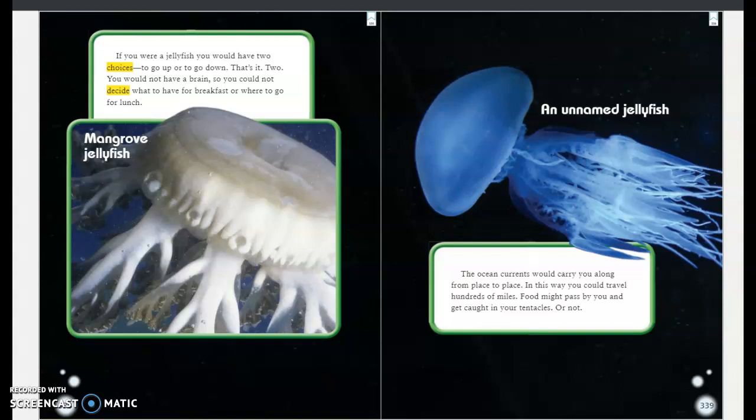This is an unnamed jellyfish. The ocean currents would carry you along from place to place. In this way, you could travel hundreds of miles. Food might pass by you and get caught in your tentacles or not.